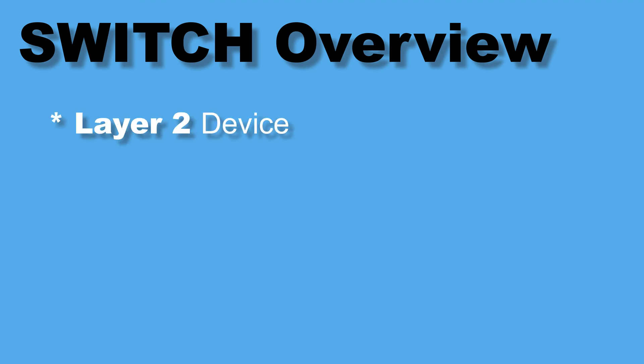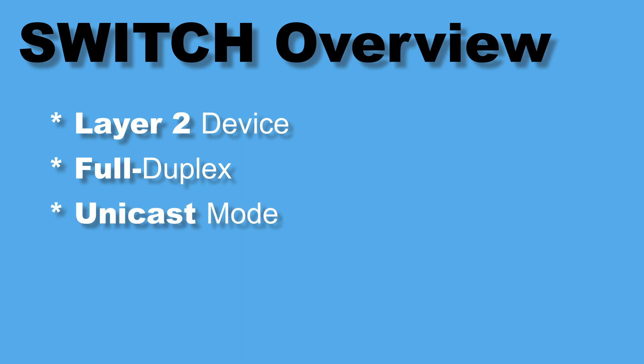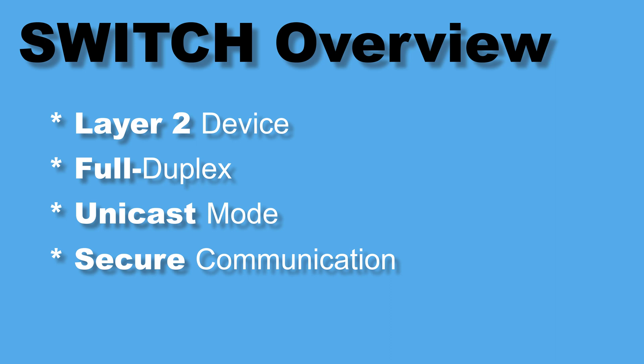So what we learned: switches operate on the data link layer, or layer 2, of the OSI model, and store and check MAC addresses of connected devices. Switches increase bandwidth by using full duplex transmission mode, meaning devices can send and receive data at the same time. Switches use unicast mode for one-to-one communication, delivering data to a specific host without flooding the network. Switches are much more secure, and each port has its own collision domain, lowering the chance of frame collision.